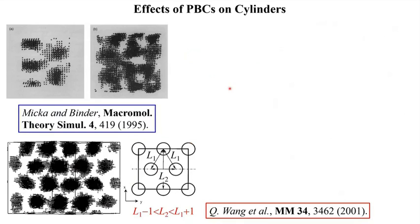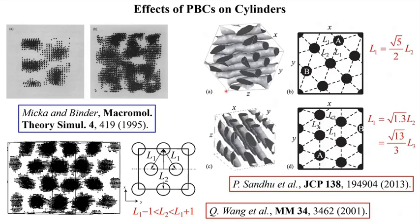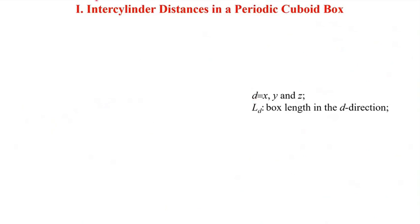For hexagonally packed cylinders, only one of us ever calculated their periodicity with specific orientations in the box. In this case, the cylinders are parallel to at least one box surface, and when looking along the cylinders, we assumed that they form isosceles triangles with the inter-cylinder distance L2 being close to L1. Treating these layers of cylinders as lamellae, we then used the formula on the previous slide to calculate L1 and L2 in the cuboid box. In two other cases reported in dissipative particle dynamics (DPD) simulations, the cylinders are not parallel to any surface of a cubic box, and the periodic boundary conditions can even make the three inter-cylinder distances all different.